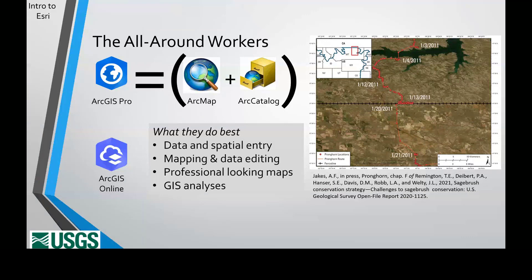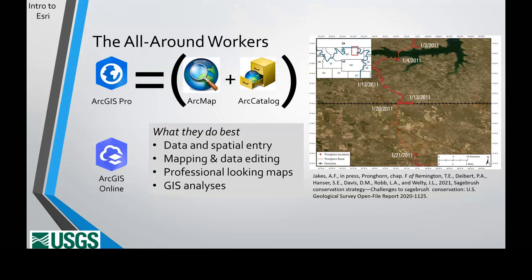Let's start with the major players. The desktop apps — ArcMap, Arc Catalog, and ArcGIS Pro — are ones everyone is familiar with. These powerful applications excel at data entry, editing, and spatial mapping, and make the maps you see in most published research. ArcGIS Pro will be replacing ArcMap and Catalog, which are going to become inoperable on computers produced in the next few years due to a Windows update. If you haven't started learning Pro yet, I highly recommend switching over now while you can ease yourself in. ArcGIS Online is a lighter version of the desktop apps, used to design maps for field data collection and manage online data.